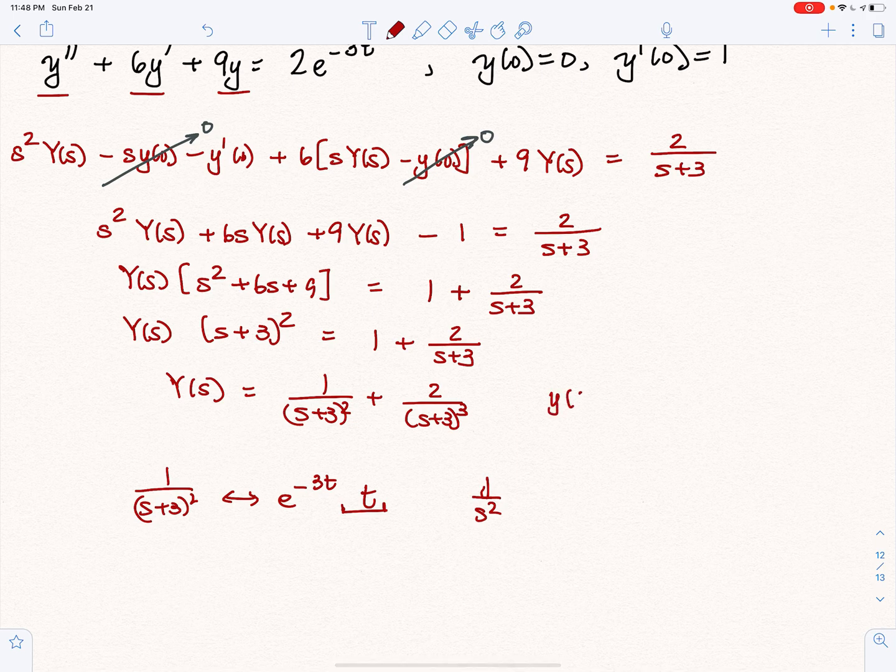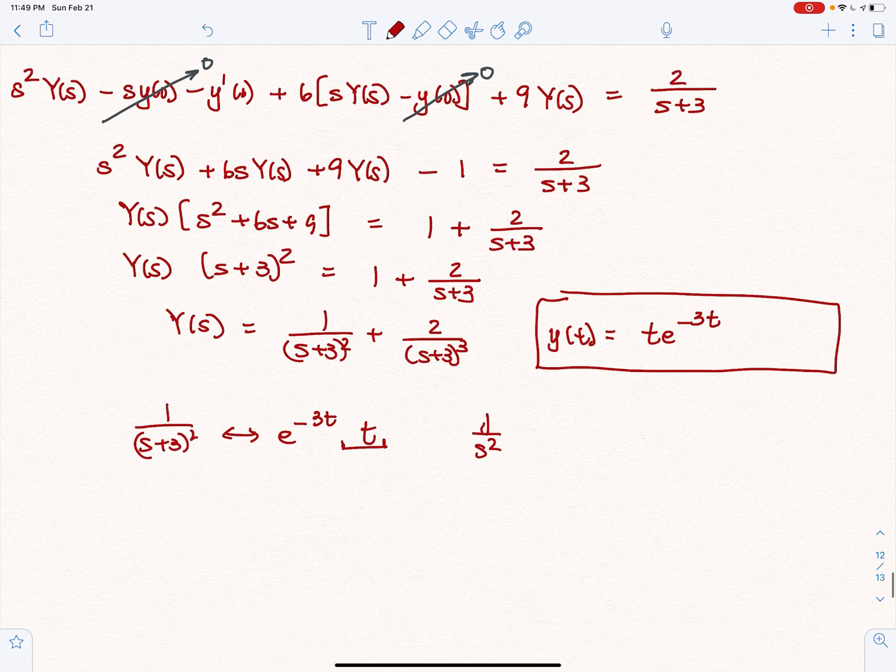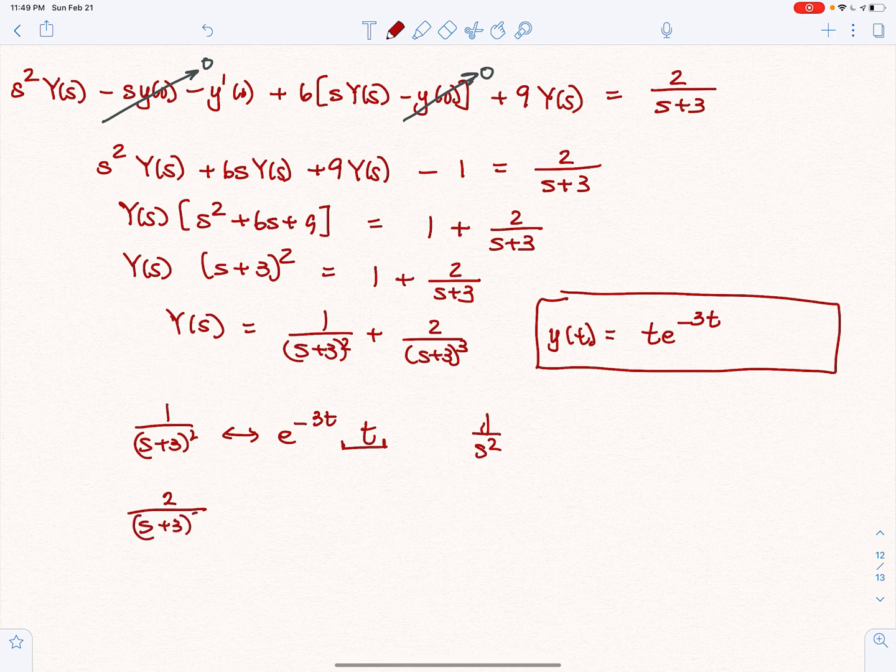That means that 1 over S plus 3 squared corresponds to T e to the negative 3T. I'm going to write my Y of T over here, and I know that the first part of the function is T e to the negative 3T. So what is the other? Let's find out.